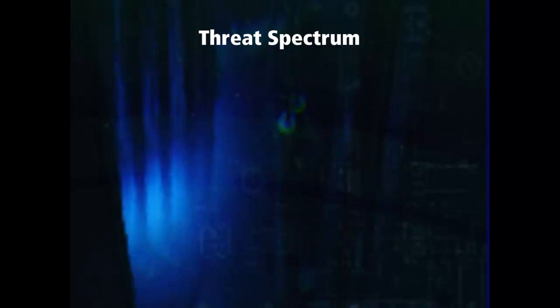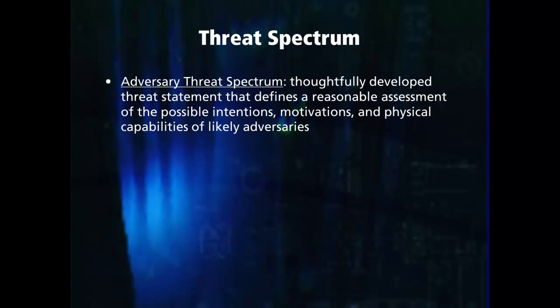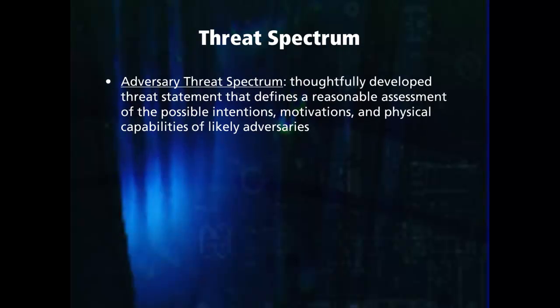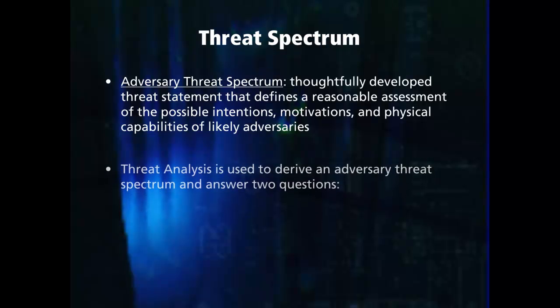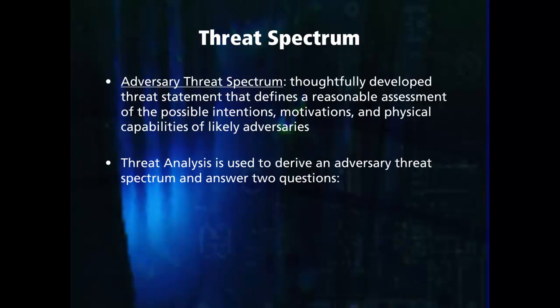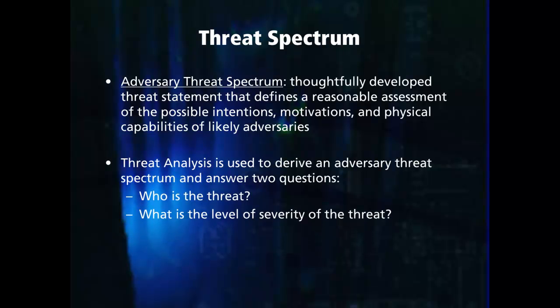A number of threats exist that may pose a security risk to nuclear facilities. A threat assessment requires that the competent authority assess the possible intentions, motivations, and physical capabilities of likely adversaries. The competent authority is the entity with the legal or invested responsibility of ensuring that facilities are adequately protected. The adversary threat spectrum is used to answer two questions: who is the threat, and what level of severity does the threat pose?